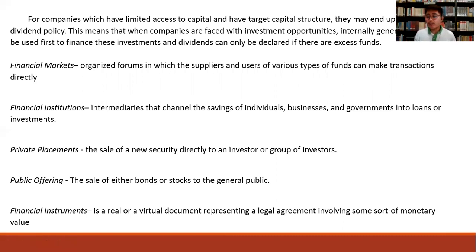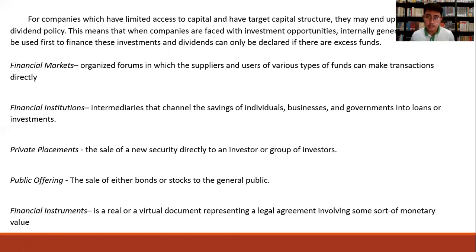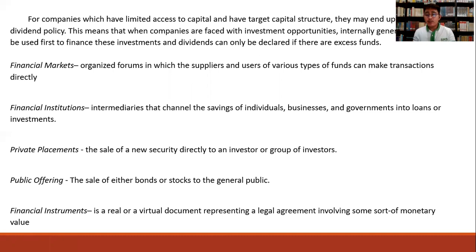First, we have the financial market. When we say financial market, there is an organized forum in which the suppliers and users of various types of funds can make transactions directly — there is a forum where the supplier and the user can make contact with each other to obtain funds. Next is the financial institution. These are the intermediaries that channel savings of individuals, businesses, and government into loans or investments. Financial institutions are the ones who make loans to individuals and businesses if they ever need funds for their own business — they give money to individuals, businesses, and government.